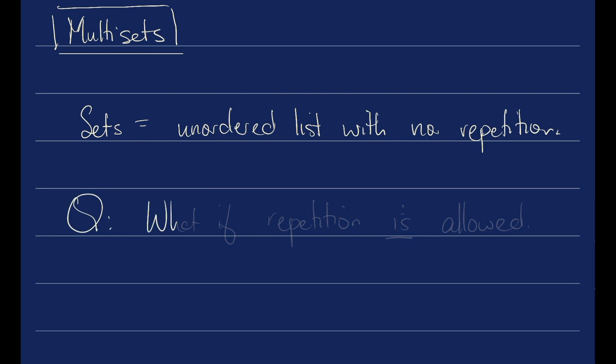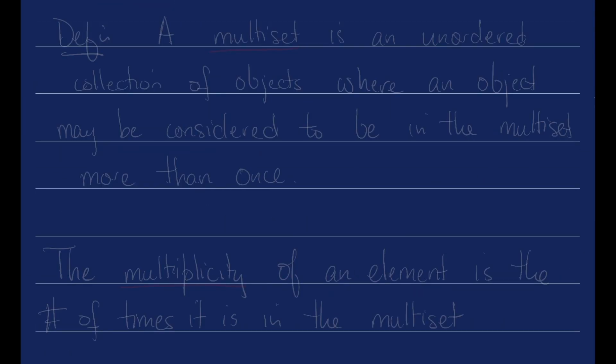The question that we can ask ourselves today is what if repetition is allowed? So what is an unordered list with repetition? For this we need a new concept that accounts for frequency but not order. Enter the multi-set.